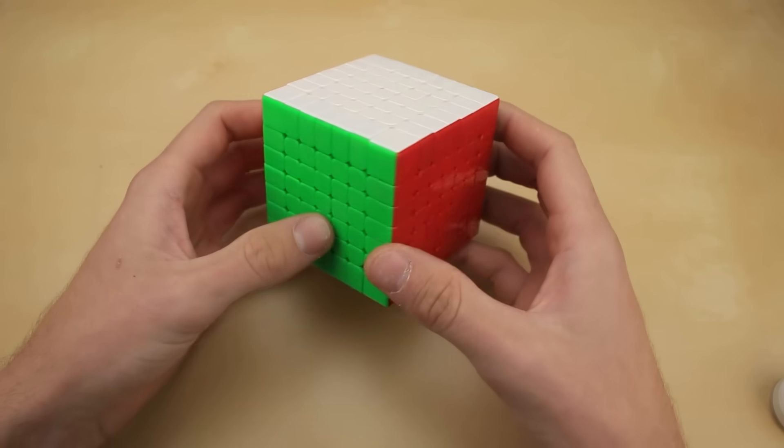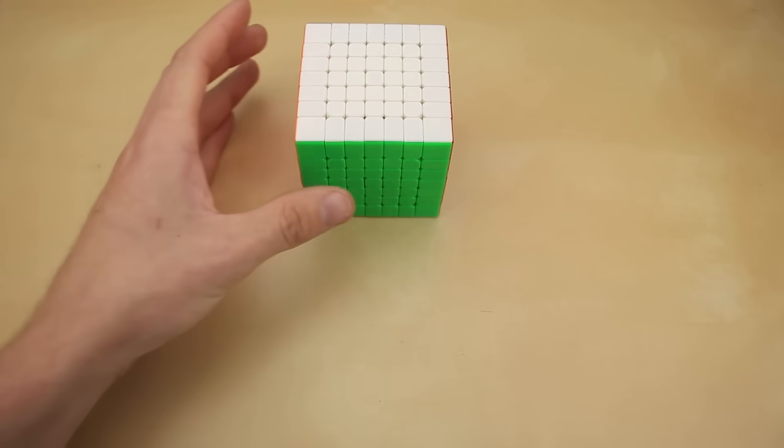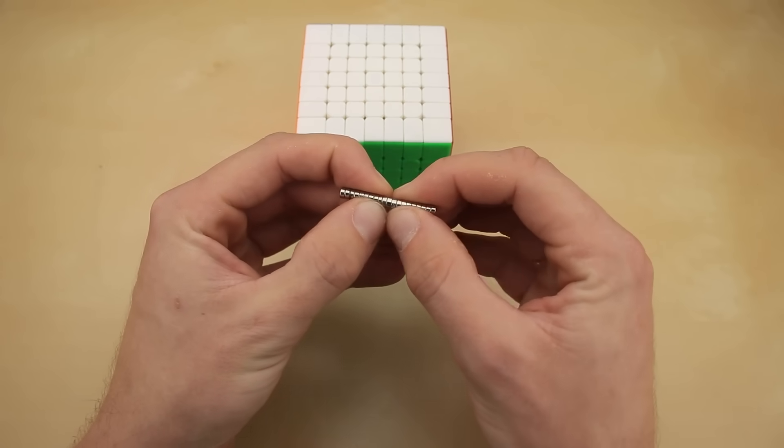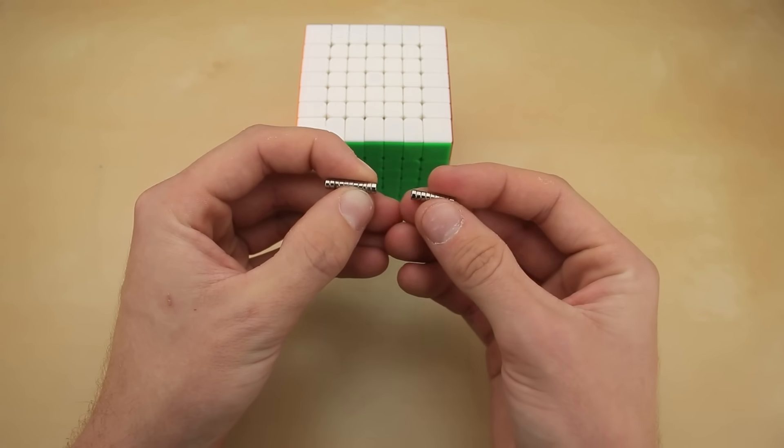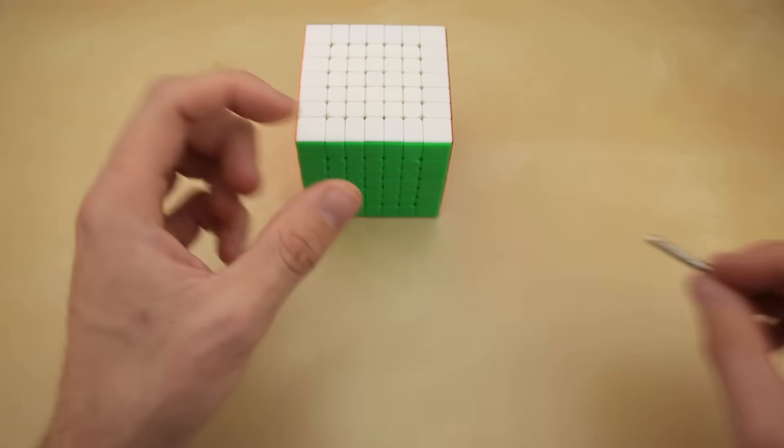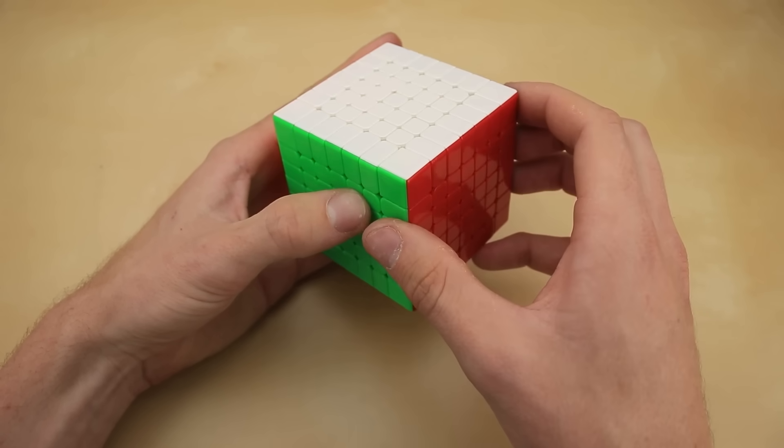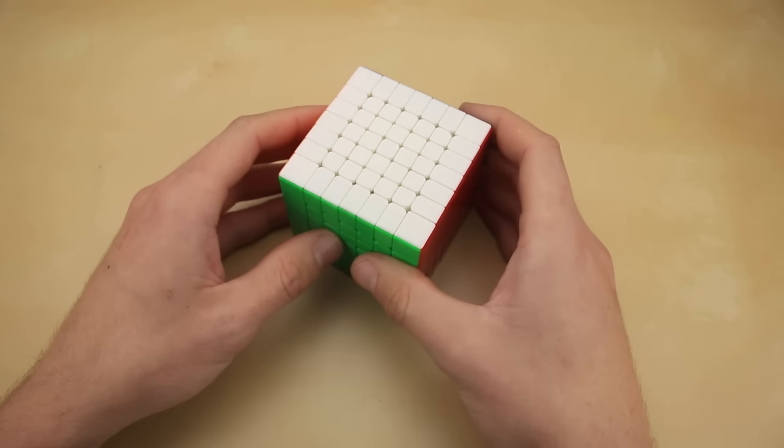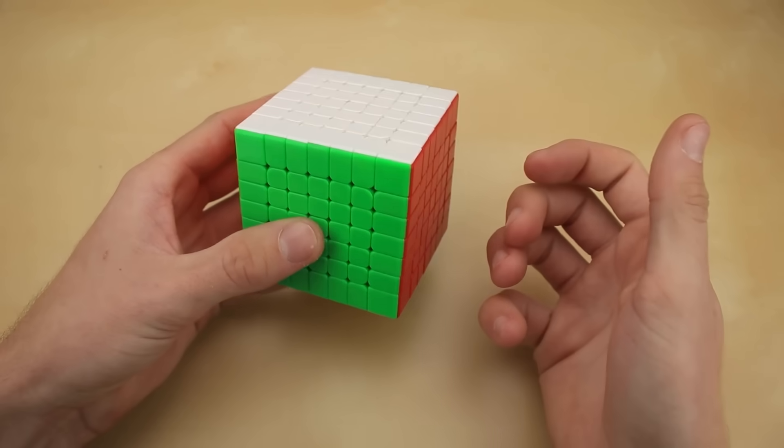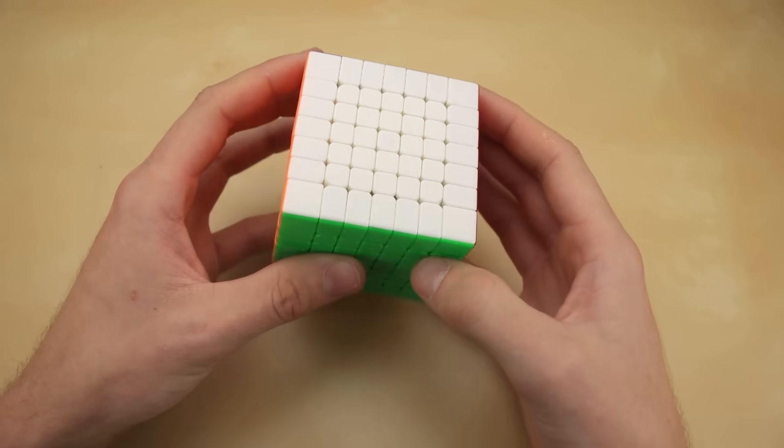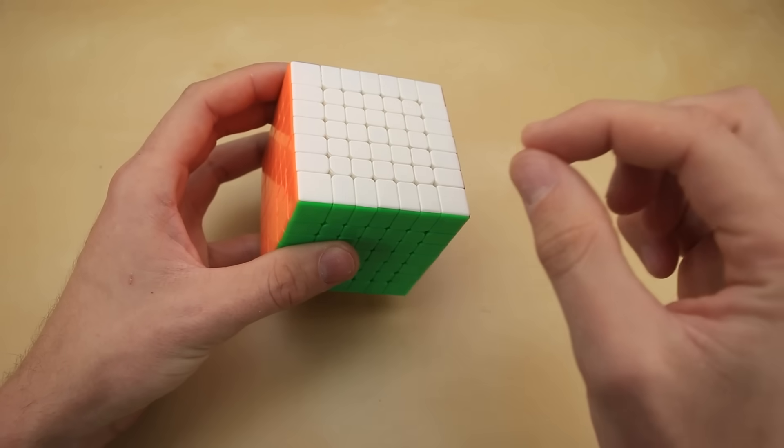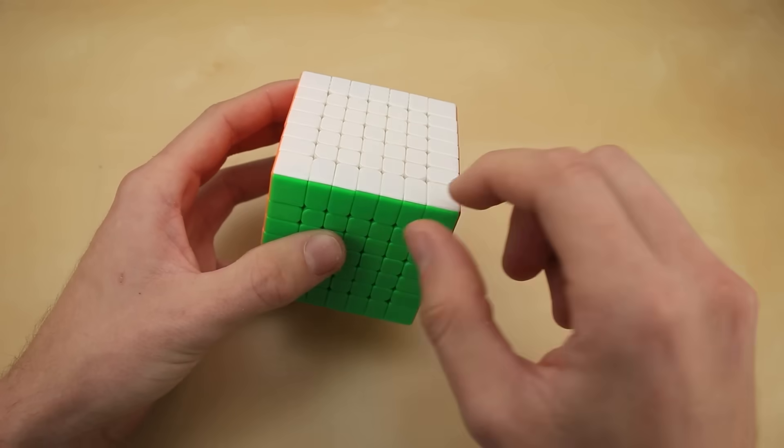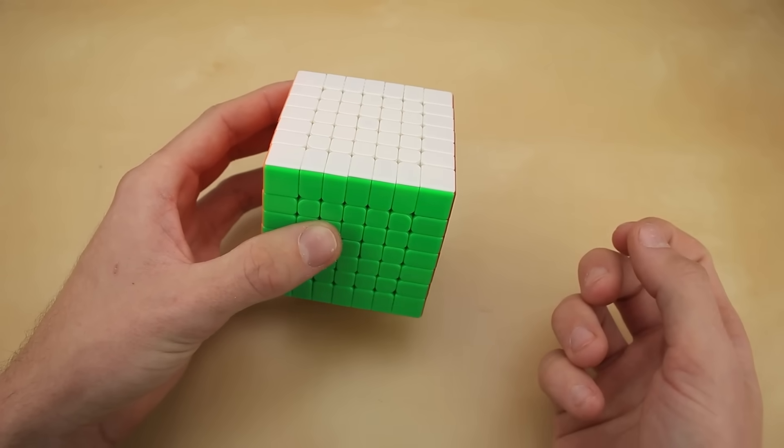In the meantime, we're going to get started by messing around with this cube's magnets. If you don't know, one of the most hilarious mods that you can do to a magnetic cube is to just flip around half the magnets so that they always repel each other instead of attracting. That way, instead of getting that nice snap at the end of each turn, the layers will just refuse to align at all.